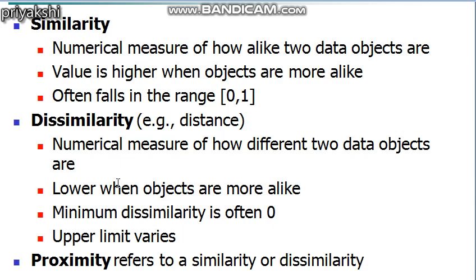For example, if the height, weight, and academic performance of two students are not the same at all, they are dissimilar, and the dissimilarity value ranges between zero and one. If two students are completely similar, their dissimilarity value will be zero — meaning they are not dissimilar at all. There is thus a clear relationship between similarity and dissimilarity. The term proximity generally refers to either similarity or dissimilarity.